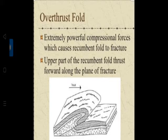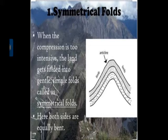Symmetrical folds - look at the limbs left and right, there is an anticline. When compression is too intensive, the land gets folded into gentle simple folds called symmetrical folds. Here both sides are equally bent. You can take the characteristics and understand which falls into the symmetrical or asymmetrical category.